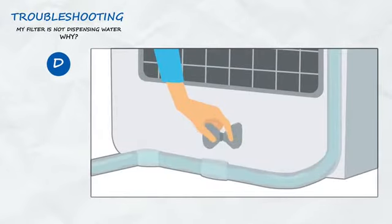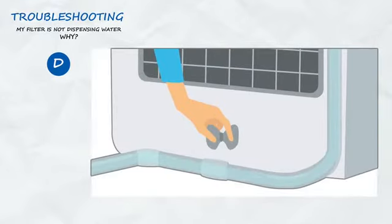Make sure the refrigerator's water line is turned on. The saddle valve connects the water supply line to the house plumbing. It must be fully open for the refrigerator to receive any water.